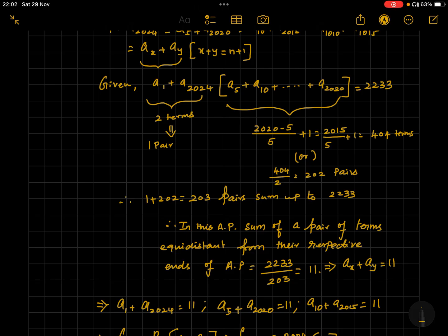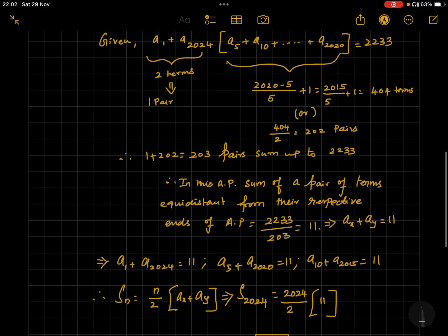Therefore we can say the sum of any one of the pairs which are equidistant in this AP is 2233 divided by 203, which is equal to 11. Therefore we can say ax plus ay is equal to 11, where x plus y is equal to n plus 1.